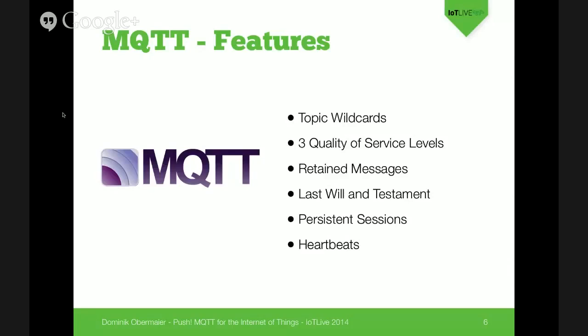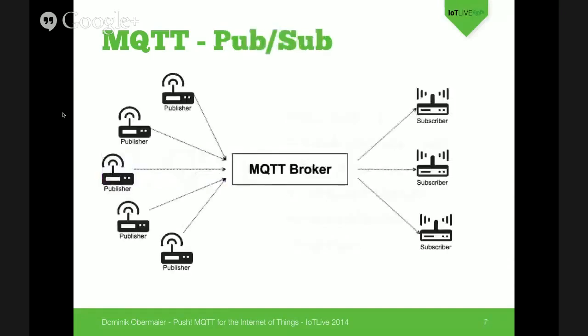MQTT has a concept of retained messages and last will and testament, as well as persistent sessions and heartbeats. This is a very simple scheme of how MQTT works: we have a central MQTT broker, on the left we have some publishers, on the right we have some subscribers. The publishers publish data, and the MQTT broker is responsible for ensuring all subscribers interested in the messages sent are getting those messages.